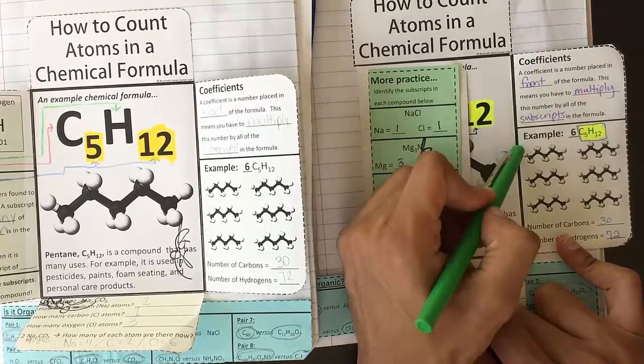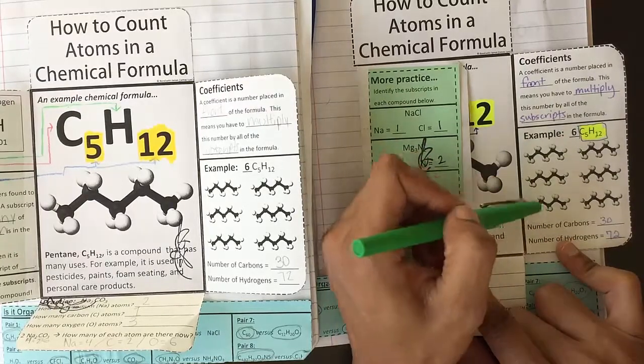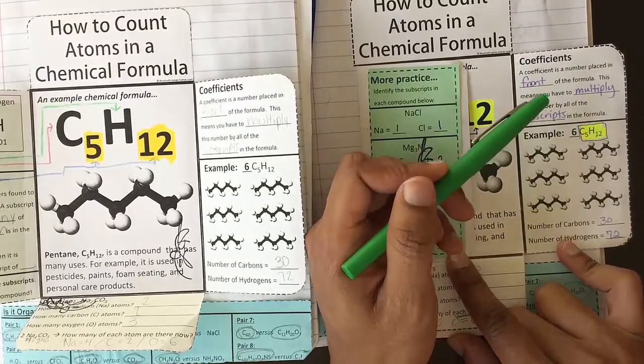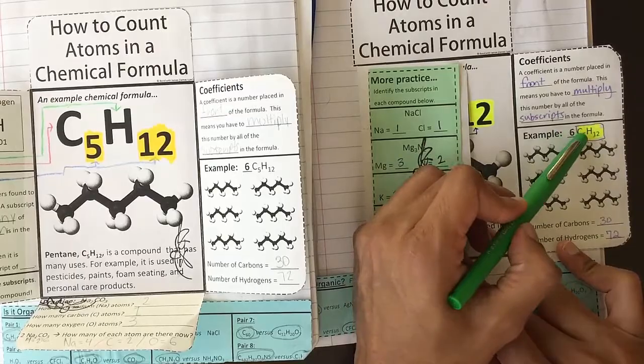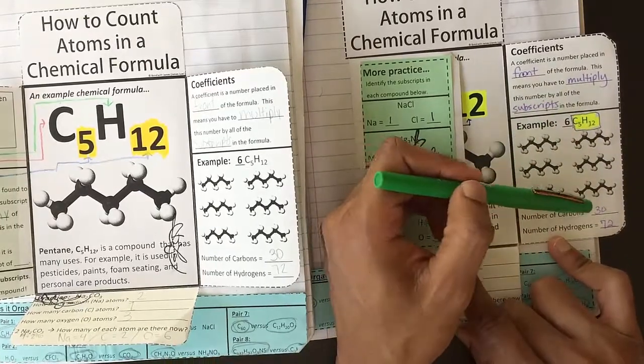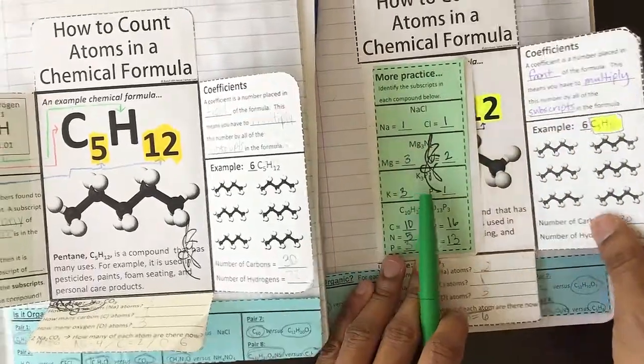And if they wanted to, they can sit and count all the white and all the little black circles. Or they can do it the easy way and they can multiply six times five, six times twelve to get the answer. When they finish with that, they flip it over.